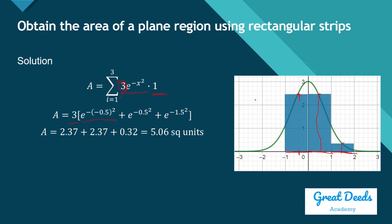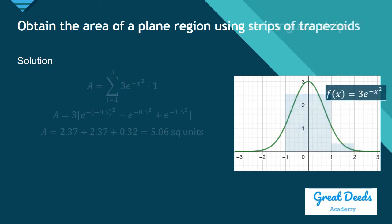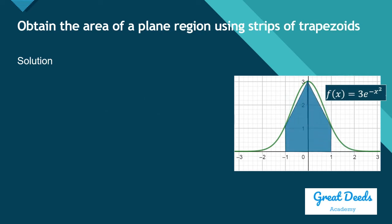Obviously there is an error — those spaces between the rectangles and the curve represent the error. It would be better if we could cover that space. So we will do it again, but this time by constructing trapezoids. Instead of rectangles, we will use trapezoids.